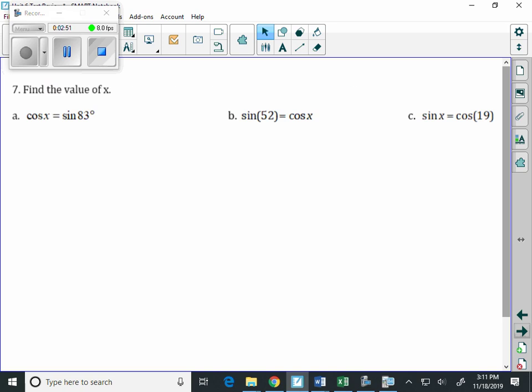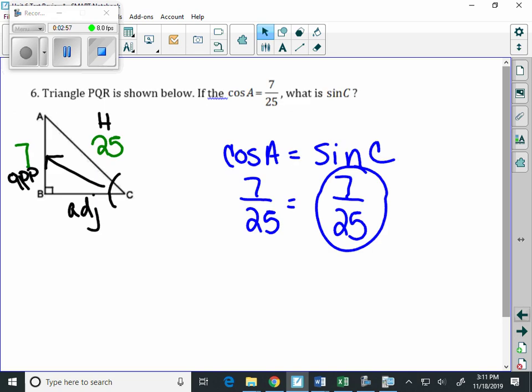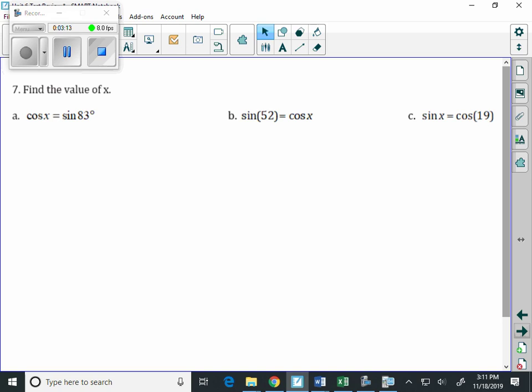On number 7, find the value of x. The thing about these is that angle A and angle C add up to be 90 degrees every single time, because there's 180 degrees in the triangle. We know 90 of it at angle B, so there's 90 left to split between A and C. For part a, the angle given is 83 degrees. To figure out our value, we take 90 minus 83, and we get 7 degrees.